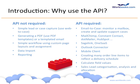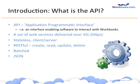So those are all use cases for the API — and there are many more I could have described. What is the API? API stands for Application Programmatic Interface — the interface that Workbooks exposes to allow programs to interact with it. It's a well-defined interface that isn't going to change without good notice; we work very hard to ensure we don't break existing integrations. It's a set of web services delivered over SSL — an encrypted connection — making it reasonably secure.